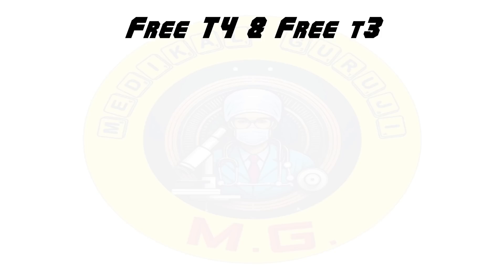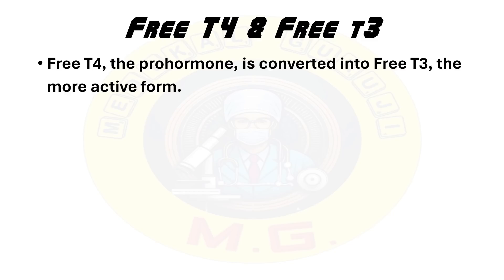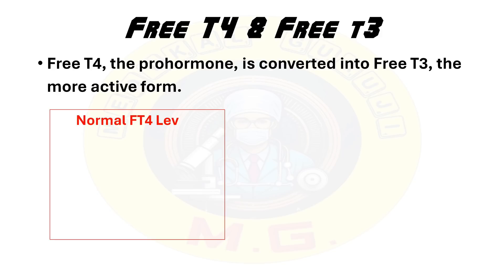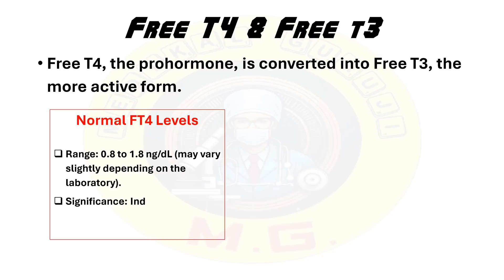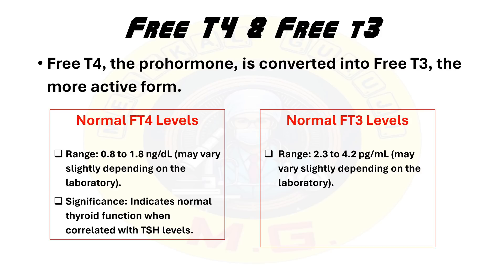Now we move on to free T3 and free T4 levels. Free T4 and free T3 are the active thyroid hormones. Free T4 is a pro-hormone; it is converted into free T3, which is the more active form. Free T4 normal range is 0.8 to 1.8 nanogram per deciliter, which may vary by laboratory. It indicates normal thyroid function when correlated with TSH levels.